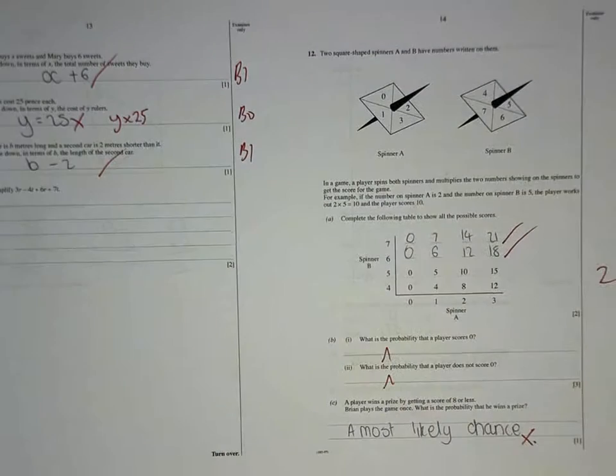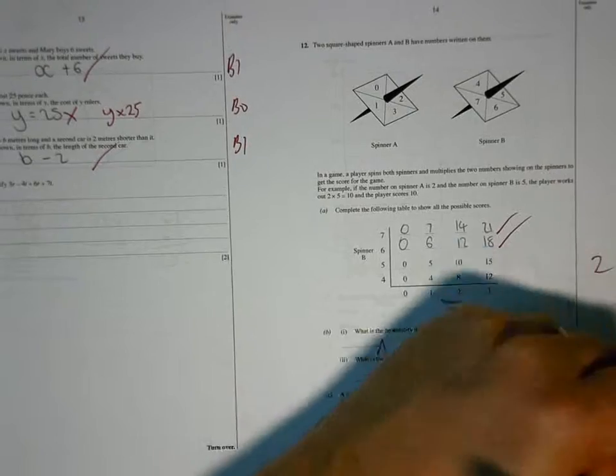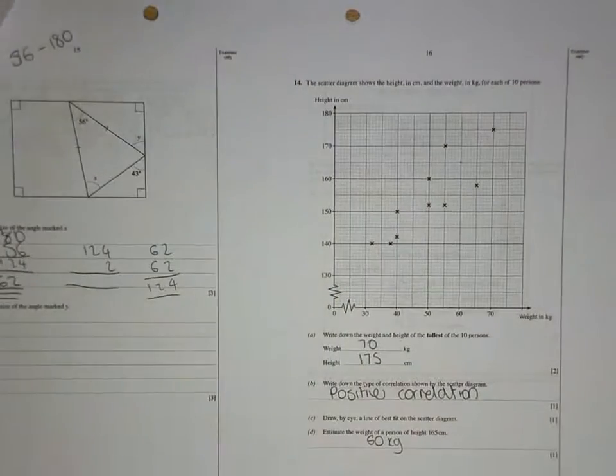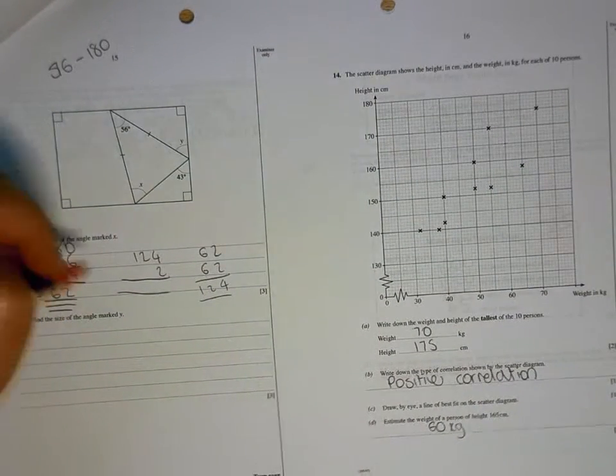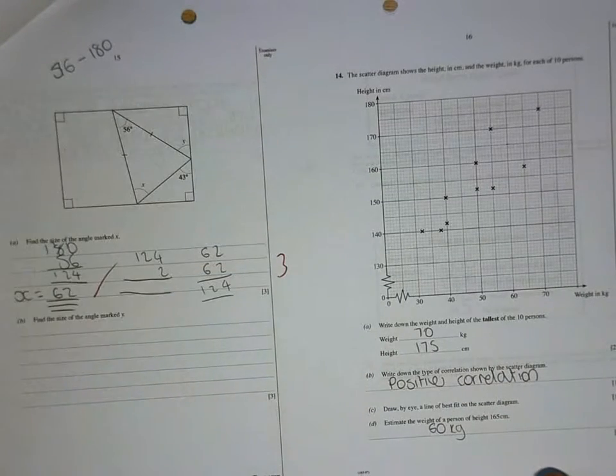These, again, were something that you could do without a problem before Christmas. 62 is correct, well done.